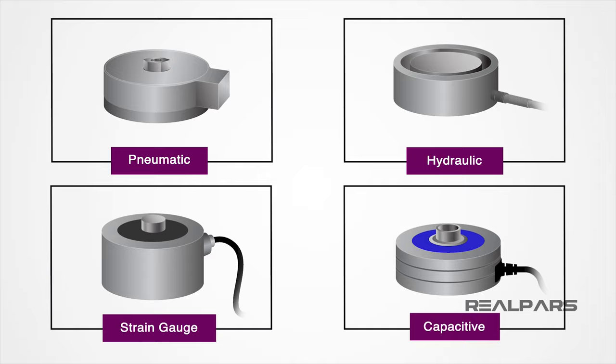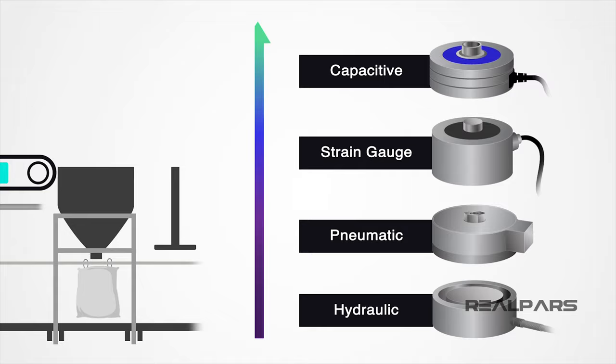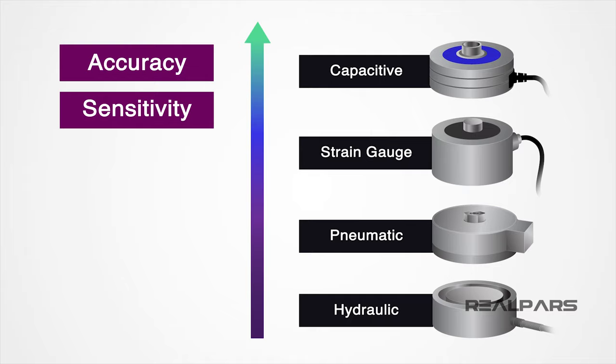In closing, we discussed the four different types of load cells. They were pneumatic, hydraulic, strain gauge, and capacitive. Also, we discussed how a load cell can be used in different industrial applications. In closing, remember that the determining factor in choosing a load cell comes down to how accurate and sensitive your application requires.